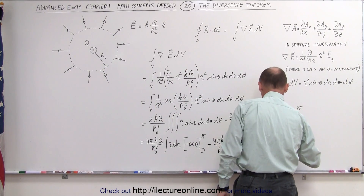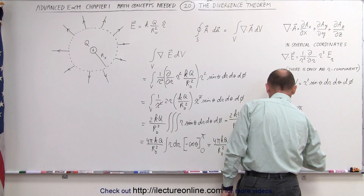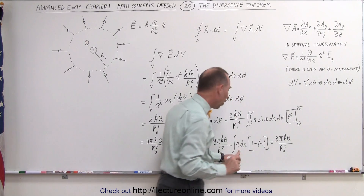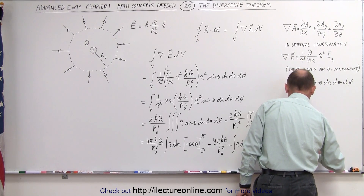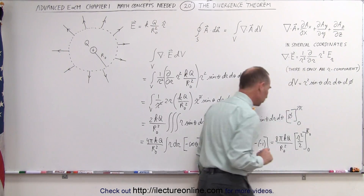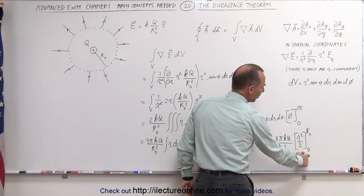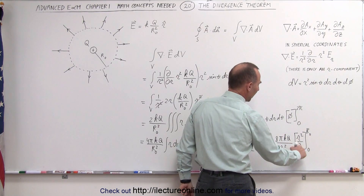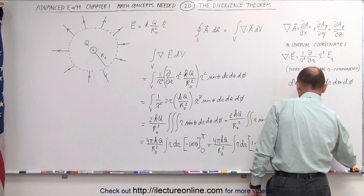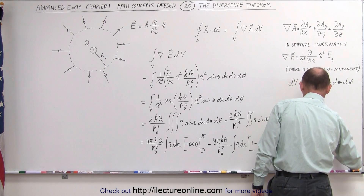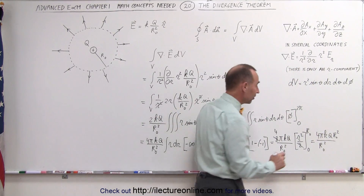Now we integrate R dR. Integrating gives R squared over 2, evaluated from 0 to R sub naught. Plugging in the lower limit gives 0; plugging in the upper limit gives R sub naught squared. The factor of 2 in the denominator cancels with the 8π to give 4π, yielding 4π KQ over R sub naught squared times R sub naught squared. The R sub naught squared terms cancel out as well.